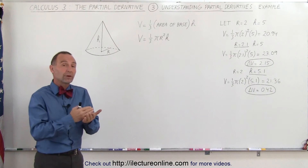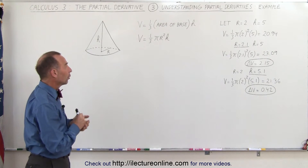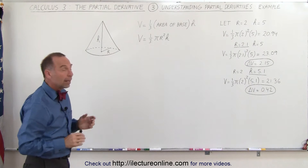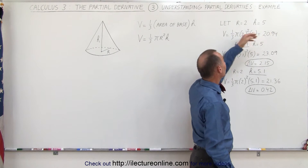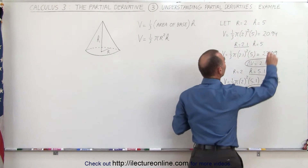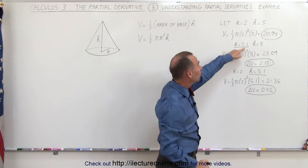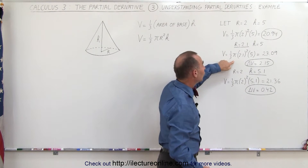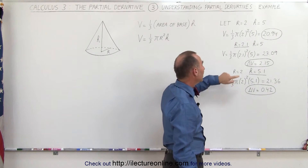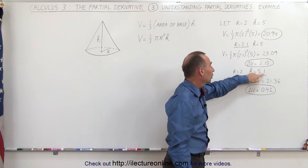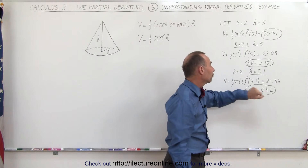We're going to take the partial derivative of the volume with respect to the radius, and then with respect to the height. If the radius is 2 units and the height is 5 units, the volume works out to be 20.94 units. If we let r change by 0.1 unit, the volume changes to 23.09, a change of 2.15. If we keep the radius the same but change the height by 0.1 unit, the new volume is 21.36, a change of 0.42.